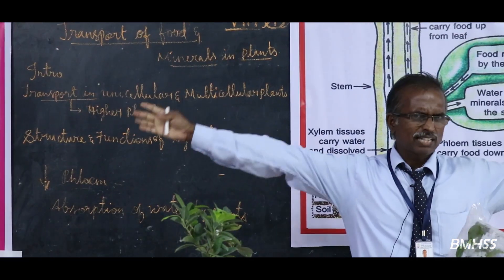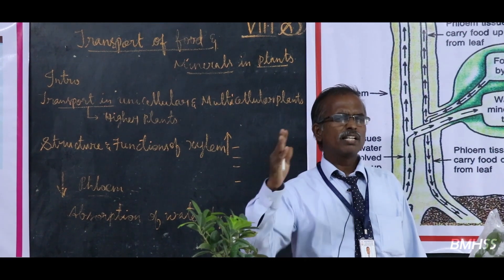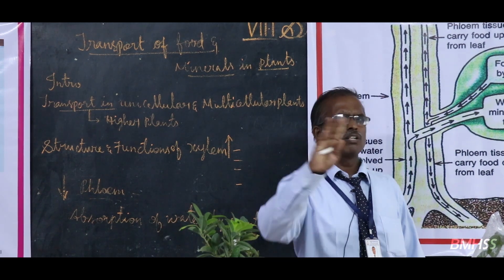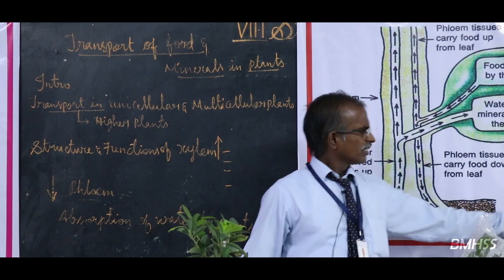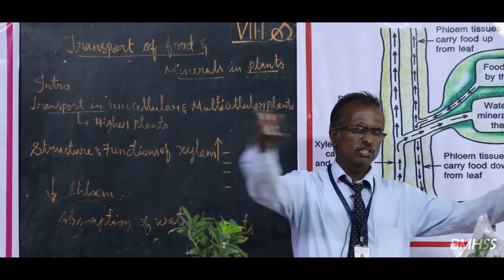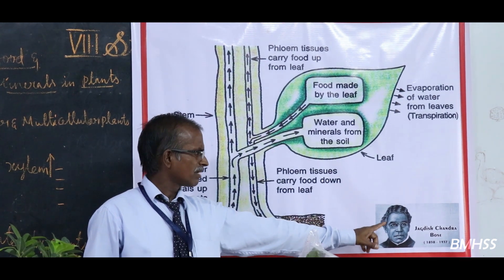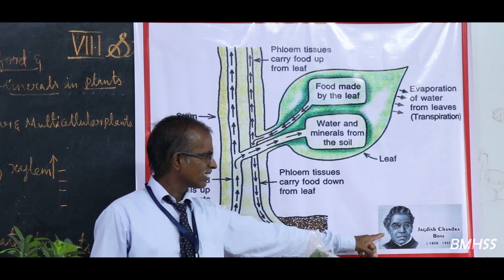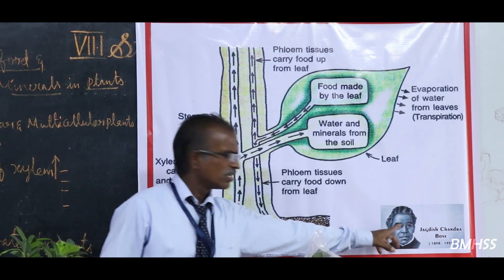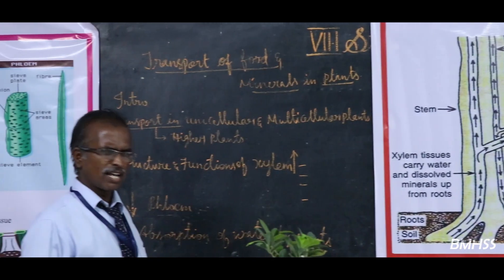The world is mainly categorized into two divisions: living world and non-living world. Anything that has a life is called a living thing; doesn't have life means they are called non-living things. Plants, animals and humans are called the living world. Plants have life - this was said by a great philosopher and scientist named Jagdish Chandra Bose.